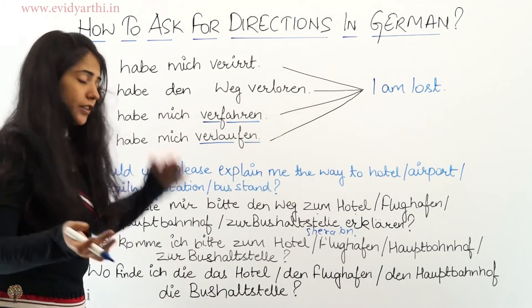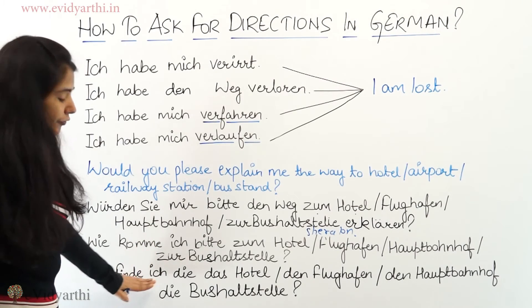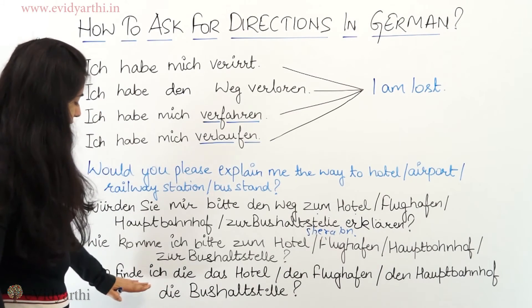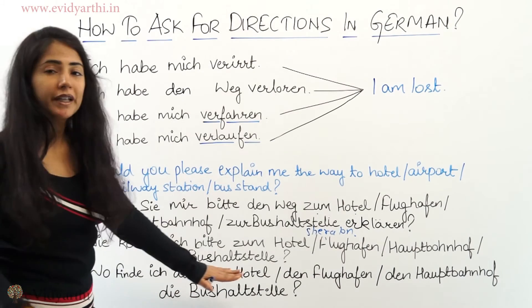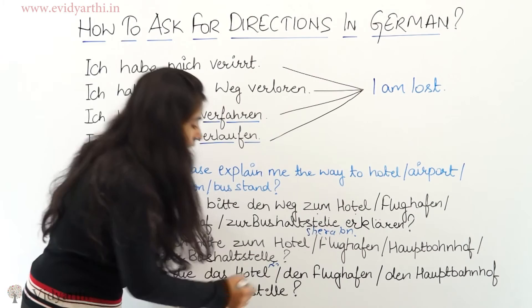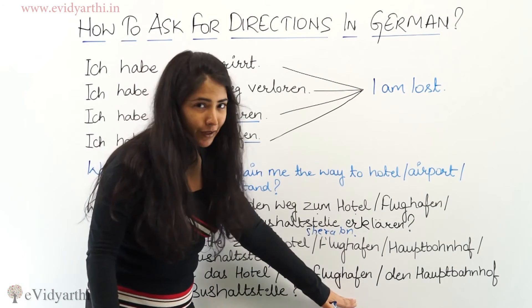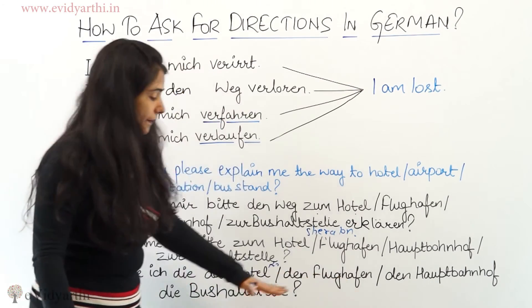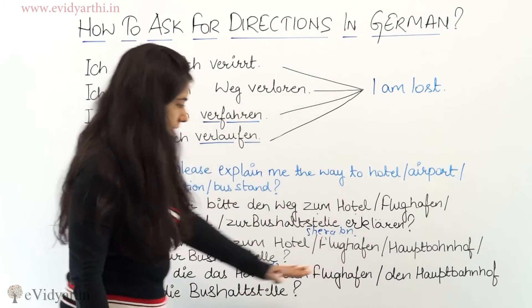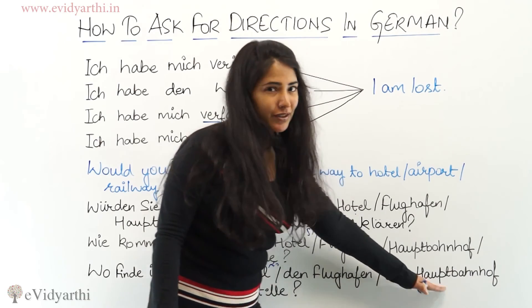There is another way of asking: 'Wo finde ich das Hotel?' which means 'Where can I find the hotel?' — for example, Hotel Sheraton. 'Wo finde ich den Flughafen?' means 'Where can I find the airport?' 'Wo finde ich den Hauptbahnhof?' means 'Where can I find the railway station?'